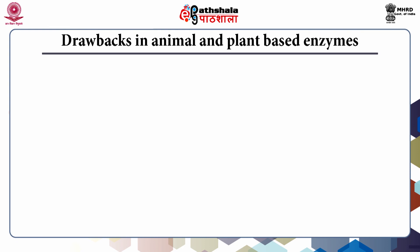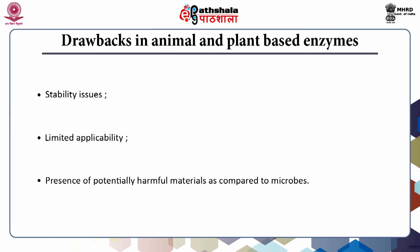Animal and plant-based enzymes do have important applications, yet they are associated with some drawbacks. The major impeding factor is a stability issue — enzymes derived from animals are relatively unstable at low pH or temperatures different from the source animal. These enzymes have limited applicability, primarily in the food industry. Additionally, plant and animal-based enzymes may contain potentially harmful materials such as phenolic compounds from plants, endogenous enzyme inhibitors, and proteases, which could interfere with enzymatic reactions. Attempts are being made to overcome these difficulties through the use of animal and plant cell tissue culture.